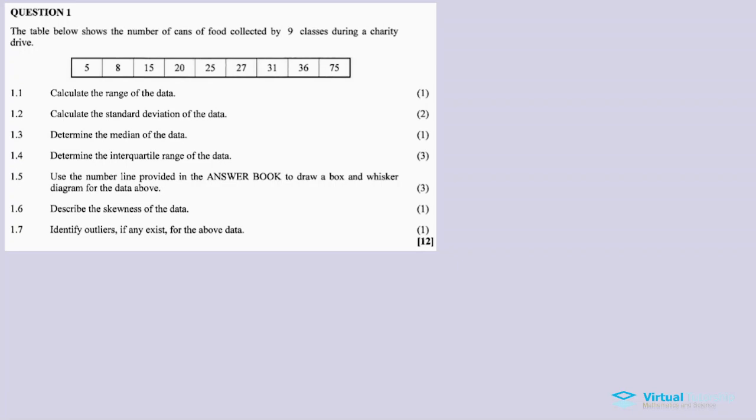All right, now question one. It's a question on statistics from this question paper, November 2016 Mathematics Paper Two. So this is a statistics question on box and whisker diagram, or the five number summary.